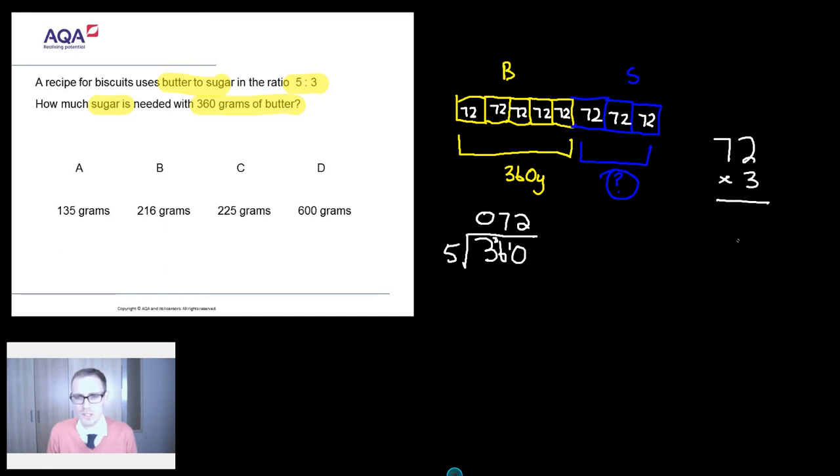3 lots are 72. 3 2s are 6. 3 7s are 21. 216 grams. And if I have a little look over here across my fingers, I nice B 216 grams. So I must have got it right.